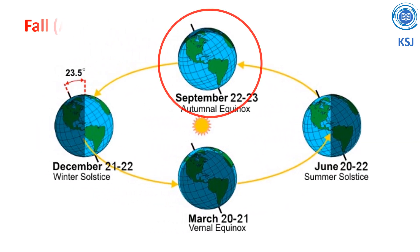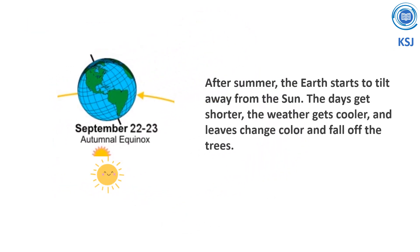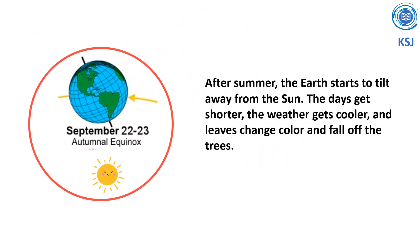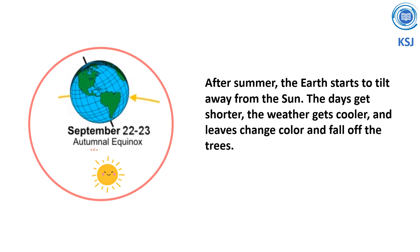Fall and Autumn: after summer, the earth starts to tilt away from the sun. The days get shorter, the weather gets cooler, and leaves change color and fall off the trees.